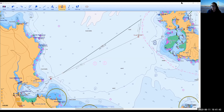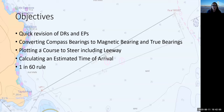Returning to the slides for a recap of tonight's objectives: quick revision of DRs and EPs, converting compass bearings through magnetic to true and back, plotting a course to steer including leeway application, calculating an estimated time of arrival, and the one-in-60 rule.